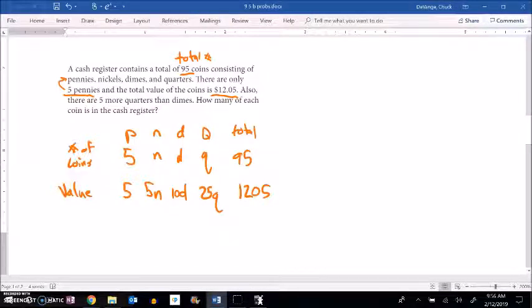It says also there are 5 more quarters than dimes. Quarters and dimes. If there's 5 more quarters than dimes, that means there's more quarters than there are dimes. So dimes plus 5 must equal quarters. Because there are 5 more quarters. Yeah, great.